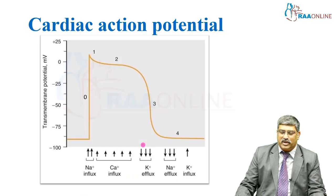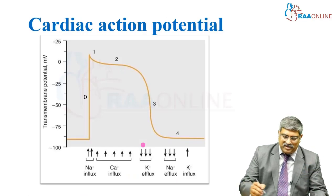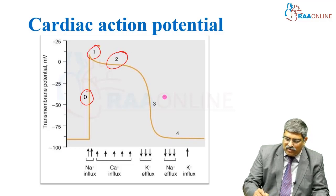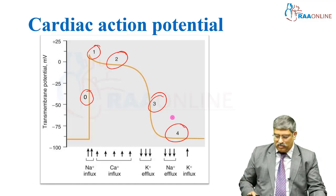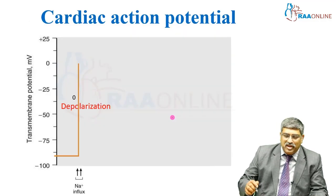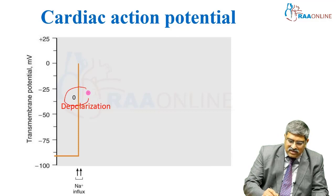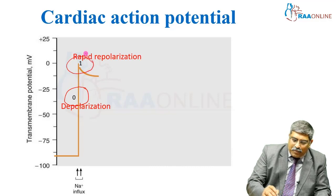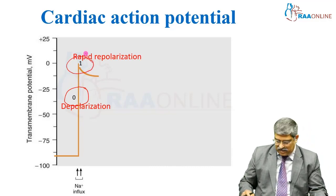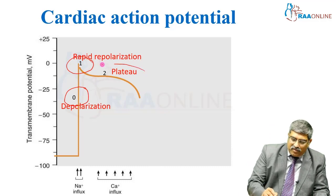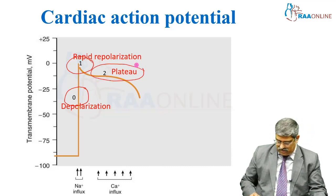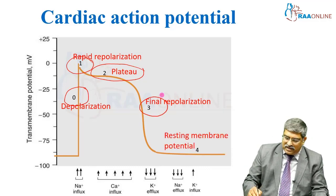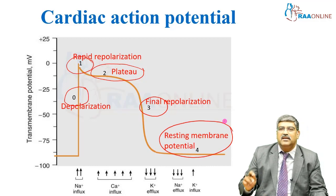Coming to action potential, it has five phases: phase 0, phase 1, phase 2, phase 3, and phase 4. Phase 0 is depolarization, phase 1 is rapid repolarization, phase 2 is the plateau phase, phase 3 is the final repolarization, and resting membrane potential is phase 4.